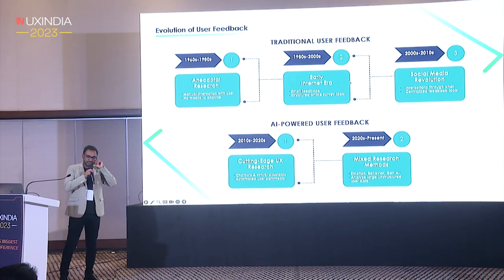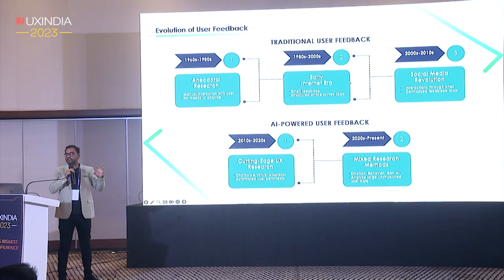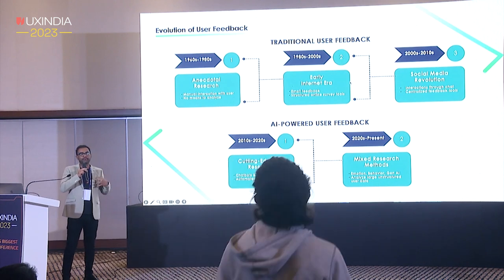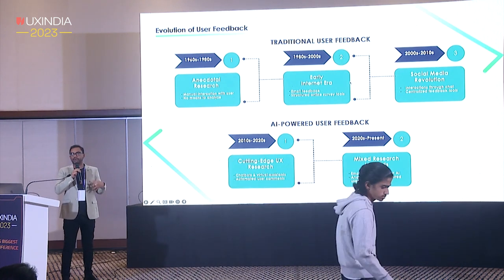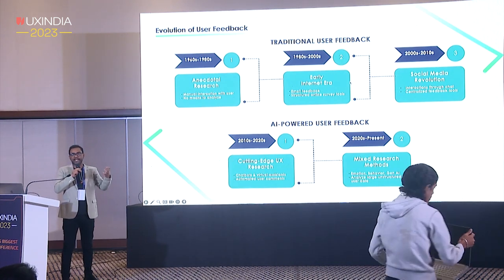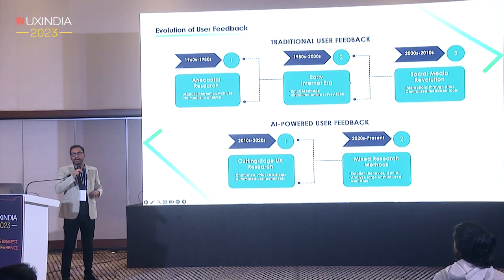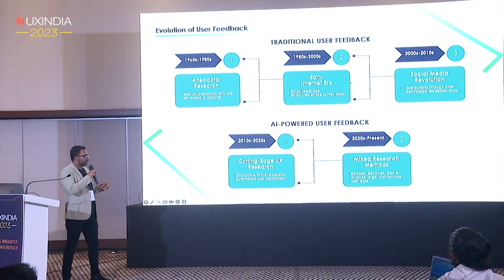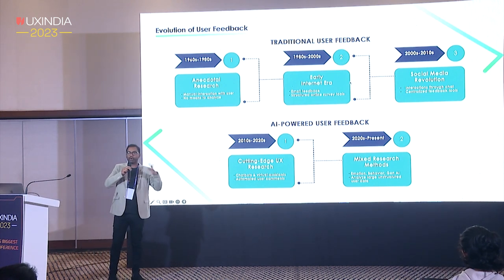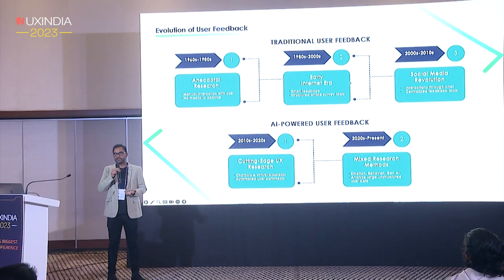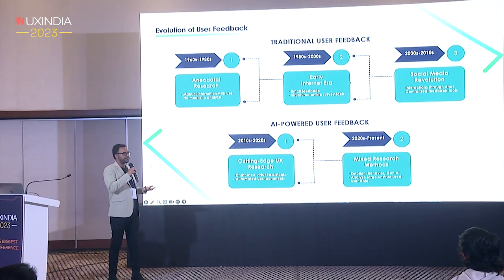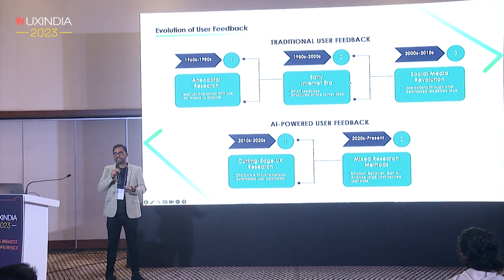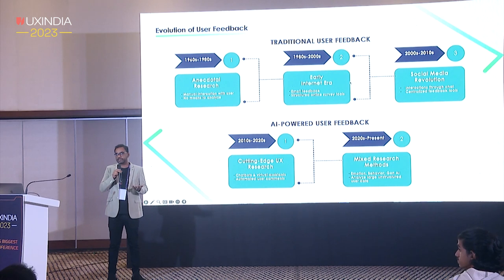There are two parts to it. One is data collection — how I can be more efficient, fast, and agile about understanding and gathering data about the consumer than the traditional way of doing things. And the second one is how you can assimilate all these sources of information to make sense of them. AI is supposed to enable you in ways where you can look at things which were not so obvious earlier.